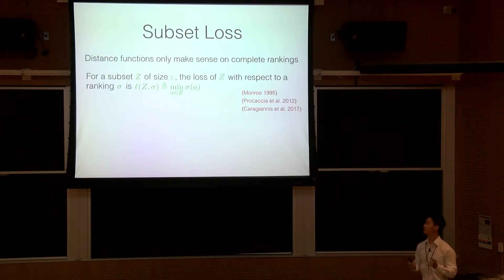One thing I have to note is that distance functions only really make sense on complete rankings. So, when we're considering things like subset loss or single winner loss, you really have to have a different metric. So, there's been a lot of previous work that says you should judge a subset only by the best alternative in that subset. So, essentially, what we're trying to do is we say, for a subset z of size little z, you basically say the loss is going to be the best position of any element in the ground truth ranking. So, let's say you have a subset z of alternatives b and c, and the real ranking is a, b, d, c. Element b has position two, and element c has position four, so the loss is going to be two.